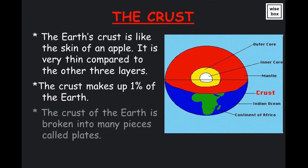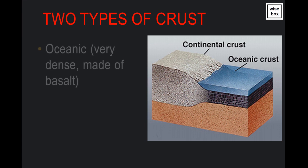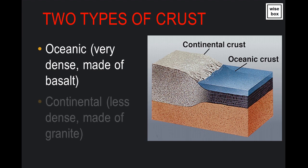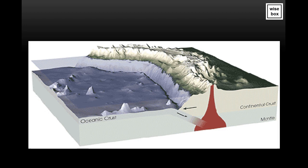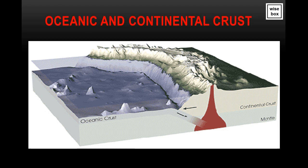The crust of the Earth is broken into many pieces called plates. The oceanic crust is very dense and is mostly made of basalt. The continental crust is less dense and is mostly made of granite.